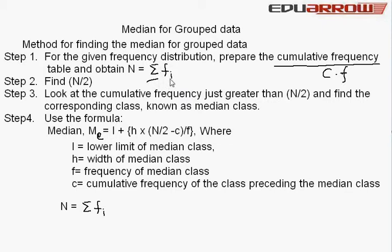Step 2: Find N/2. Step 3: Look at the cumulative frequency just greater than N/2 and find the corresponding class known as median class.